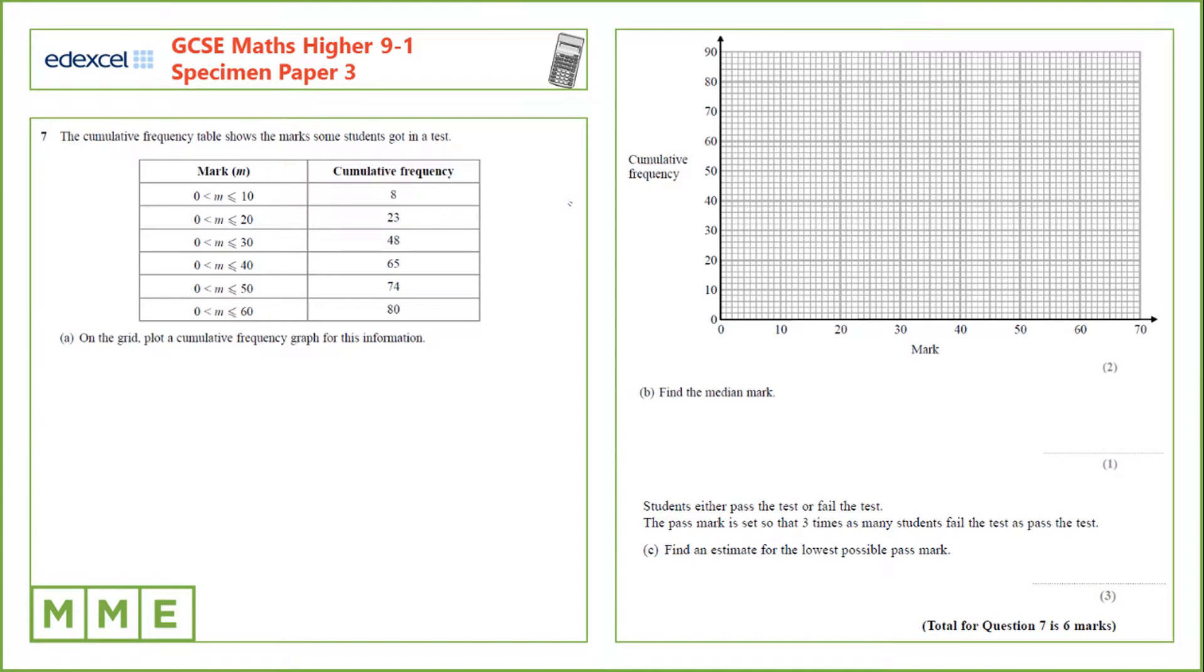Question 7. The cumulative frequency table shows the marks some students got in a test. On the grid we need to plot a cumulative frequency graph for this information. We already have the cumulative frequency here so we don't need to add any of it up.